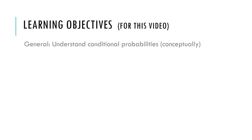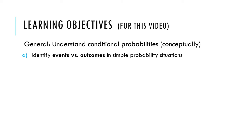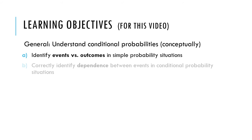So the learning objectives for this video are to understand conditional probabilities, which is sort of a prerequisite for hypothesis testing logic — just conceptually. We're not going to calculate any; I'll show you some calculations, but you don't have to do them. Identify events and outcomes in simple probability situations. We'll have a probability chapter later on in a few weeks, and this is just kind of a preview of that.